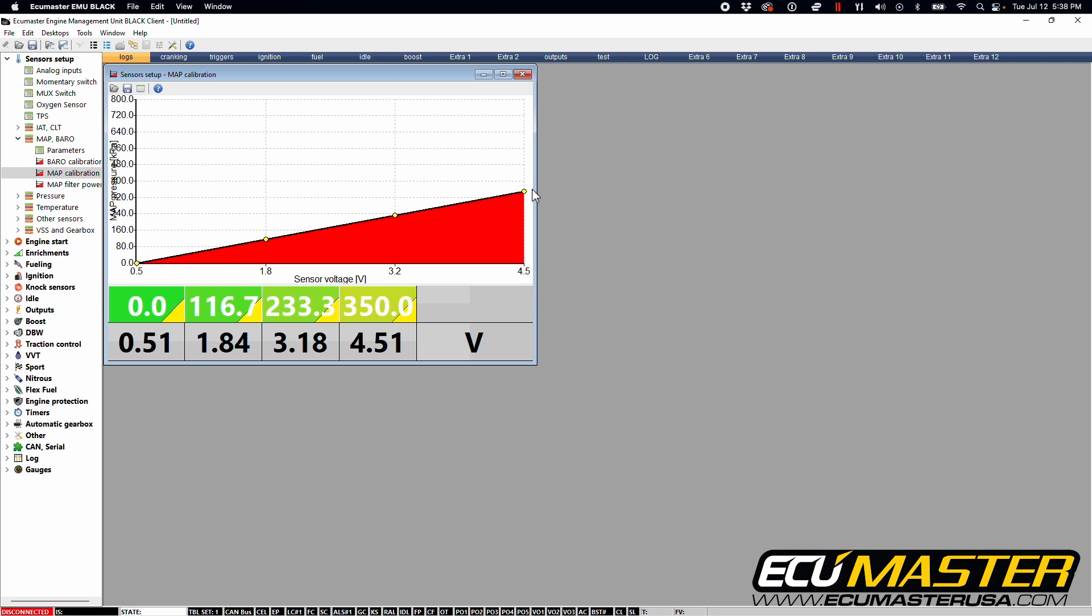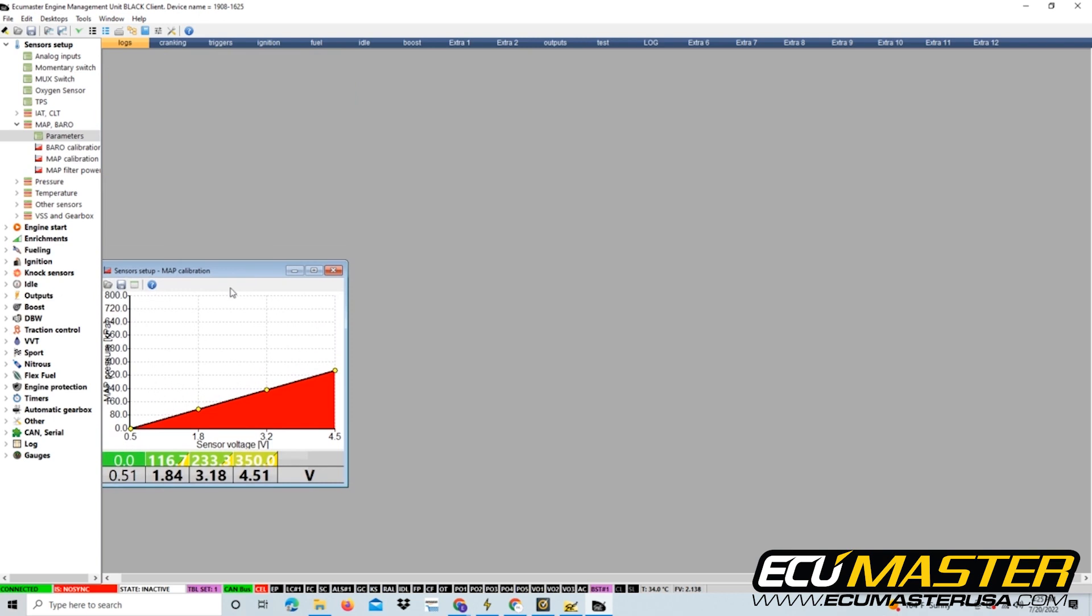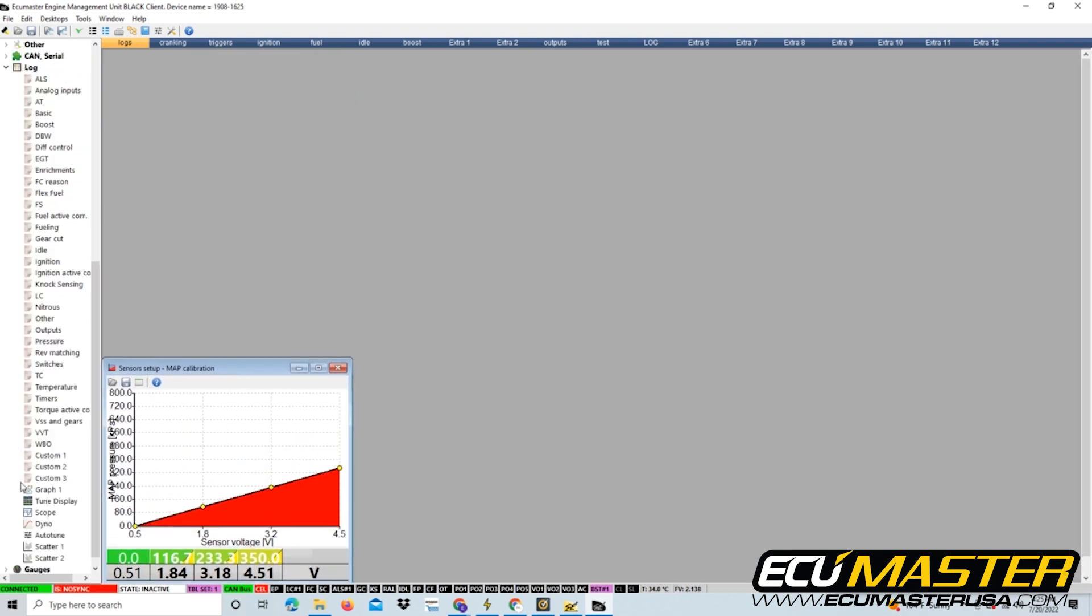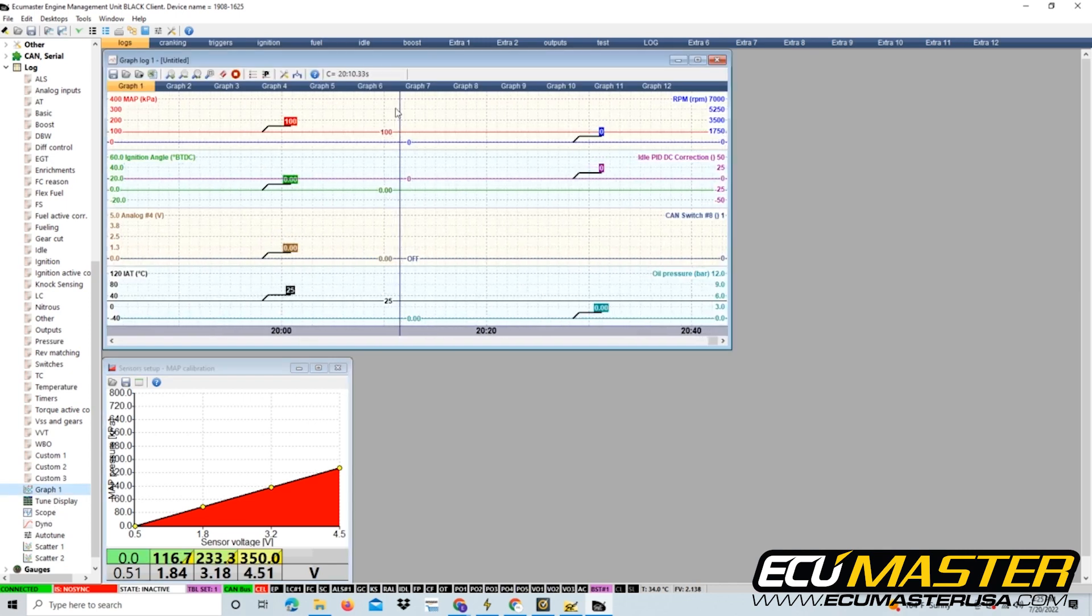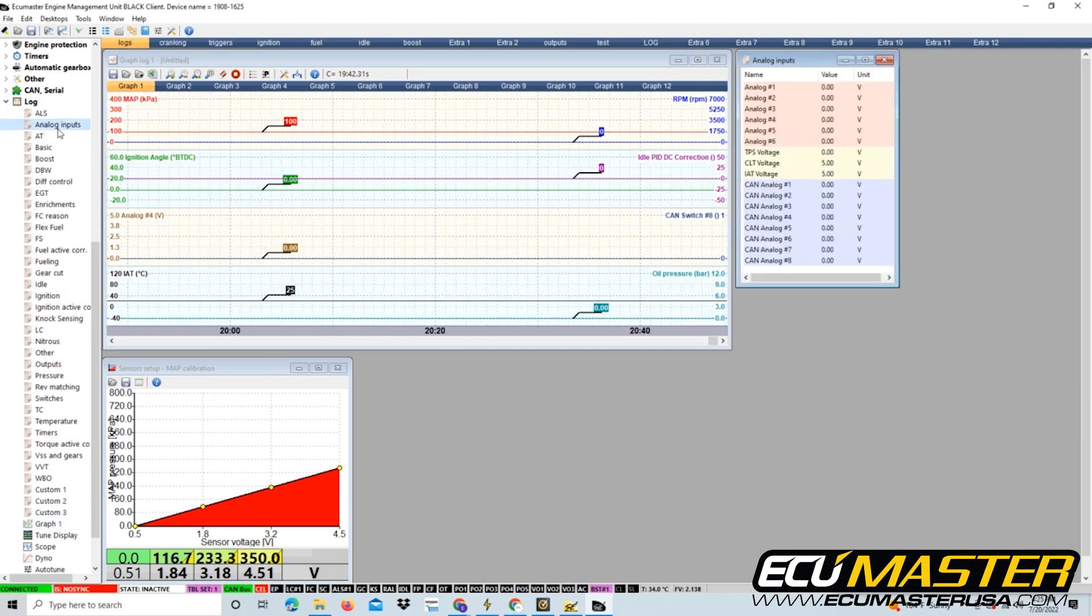Now that we have our sensor set up in our EMU Black software, let's go ahead and verify that it's working. You'll see here that we have our map calibration for our three and a half bar map sensor. We're going to hook up to our EMU Black unit itself. You'll see now that we are already hooked up and connected. That's green lighted here, indicated, and it also says connected to the device. So we're going to go ahead and move this out of our way. And we will open up our graph log. And next, we're going to go all the way to the top of this log list here on the left and open our analog inputs.